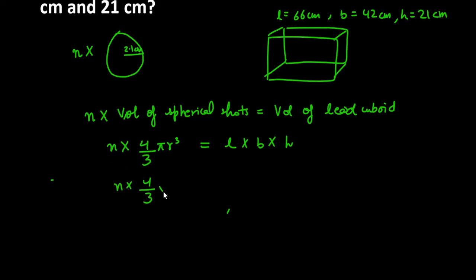So it will be n times 4 over 3 times pi, which is 22 over 7, times R cubed. We will write 2.1 three times because the cube was given to us, equals 66 into 42 into 21.